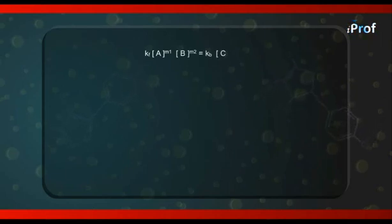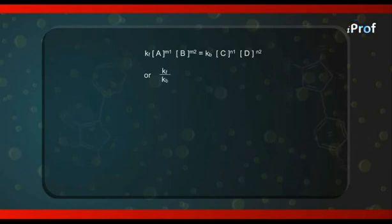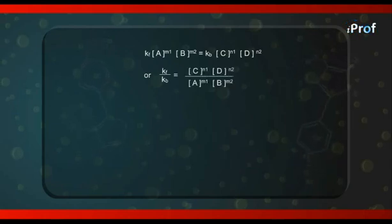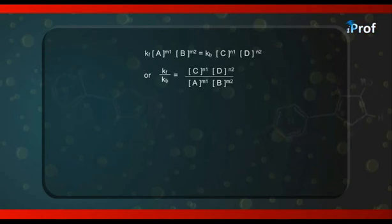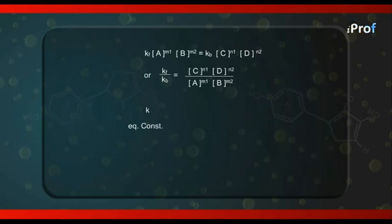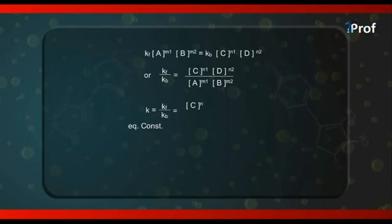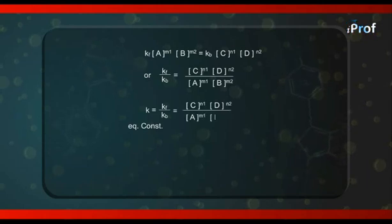Rearranging, kf/kb = [C]^n₁ × [D]^n₂ / ([A]^m₁ × [B]^m₂). This ratio of the two rate constants — note it is the ratio of the rate constants, not the rates themselves — is another constant, which we write as K, the equilibrium constant. So K = kf/kb = [C]^n₁ × [D]^n₂ / ([A]^m₁ × [B]^m₂).